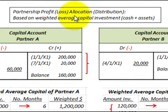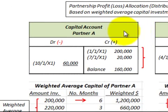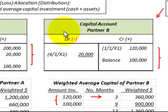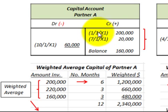We're going to be looking at partnership profit and loss allocation, based on the weighted average of capital investment that each partner has. The capital investment is the cash and assets the partner has invested in the partnership. We start by looking at the capital account for each partner, which represents those investments. When working with weighted average capital, we match dates with the amount of capital invested for each period.